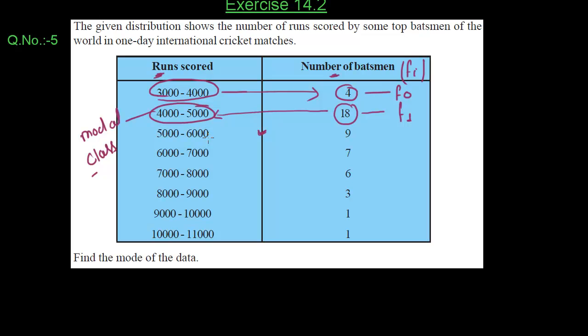Similarly, frequency of that class interval which comes just after the modal class interval is our F2. Here, 9 is our F2 because 5000 to 6000 class interval just comes after the modal class interval and its corresponding frequency is 9.